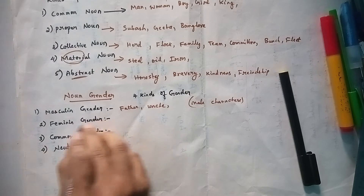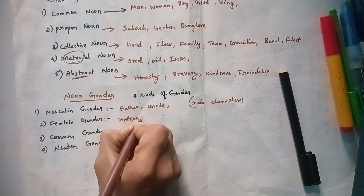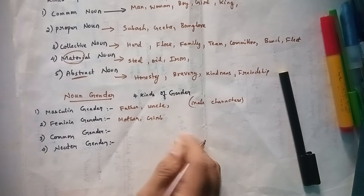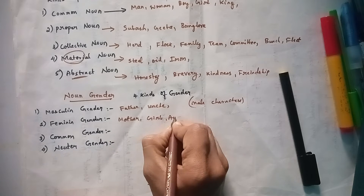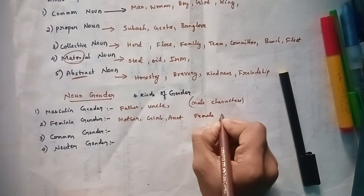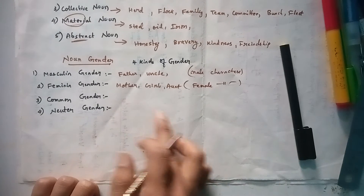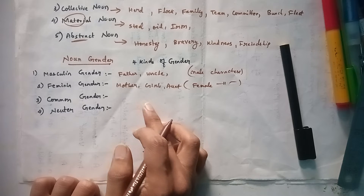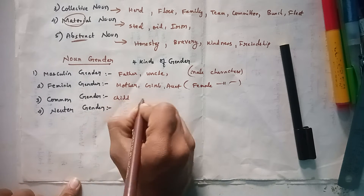Feminine gender is the opposite of masculine — it refers to female characters. Examples: mother, sister, girlfriend, aunt — these are feminine gender. Common gender means a noun used to denote either a male or female character. Examples: child, cousin, doctor, lawyer, teacher.